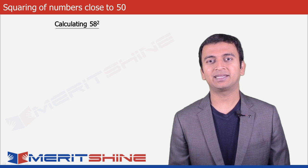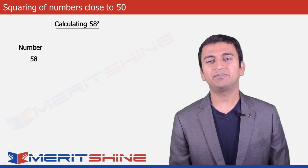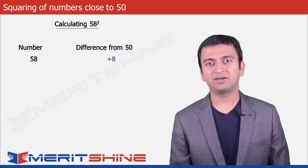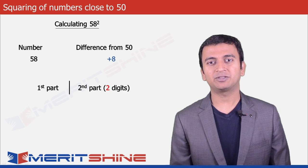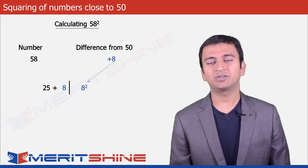Let us take 58 as an example. The first step would be to determine the difference from 50. So 58 minus 50 is plus 8. Now we can proceed to write down our answer which would be in two parts. The first part would be 25 plus the difference and the second part would be the difference squared.